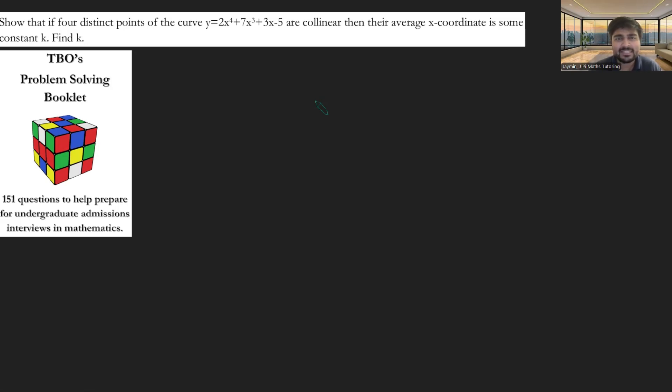Okay, interesting. Quite a cool problem. We've got a quartic here, which may seem a bit scary, and we're told that there are four points on here, distinct points, which are collinear.